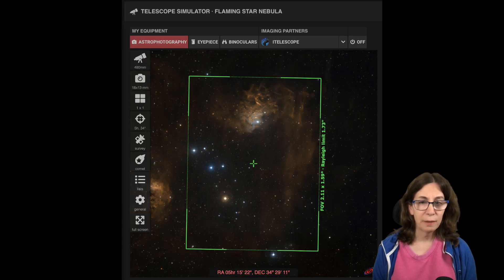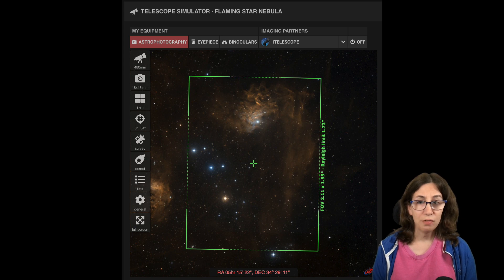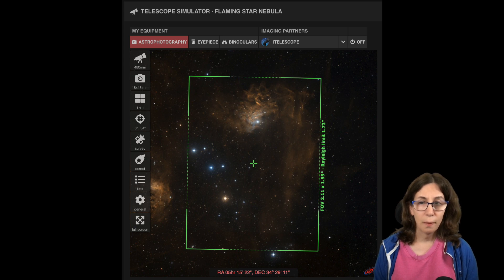You can see it here, framed on Telescopius, as I framed it in 2019 with the Stellar View SV80 and the ASI 294MC Pro. This field of view covers about 2 degrees by 1.5 degrees, and the entire nebula fits comfortably inside.